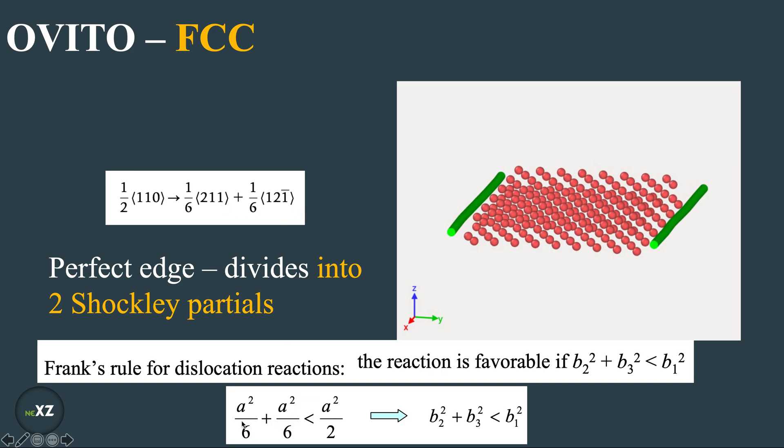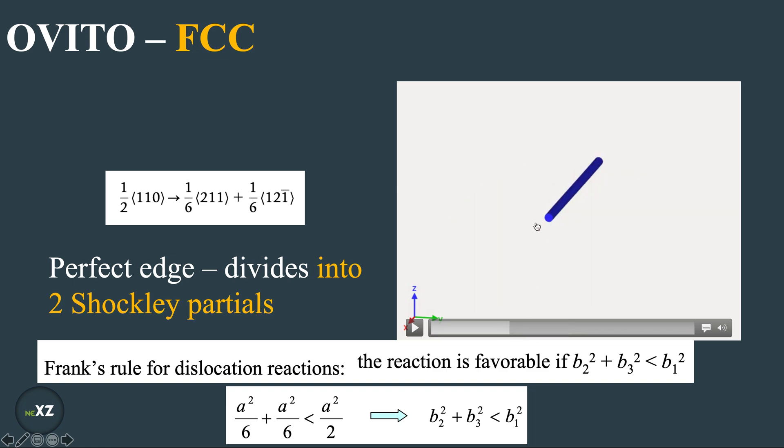So if you take the Burgers vector of these two you get a squared by 6 plus a squared by 6, that is nothing but a squared by 3 which is less than a squared by 2. So this reaction is favorable because of the energetics. This has a low energy state compared to the perfect dislocation.